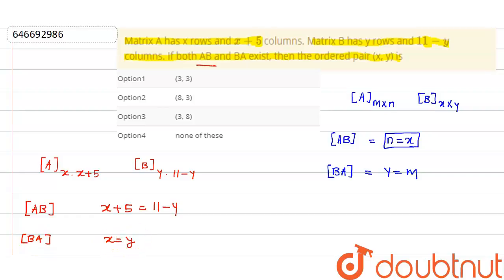So if I apply these two equations, I have 2X when I substitute Y equals X. Moving terms to one side, 2X equals 11 minus 5, which is 6. So X equals 3, which means Y also equals 3. Therefore, the ordered pair is (3, 3), which is option 1.